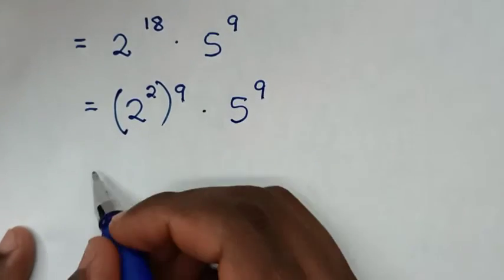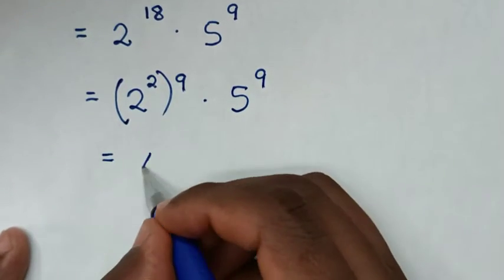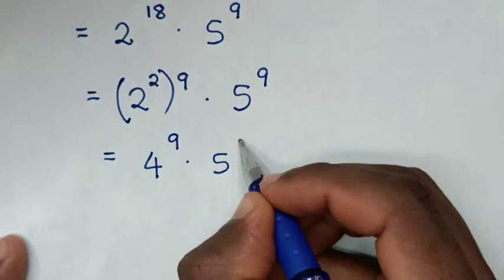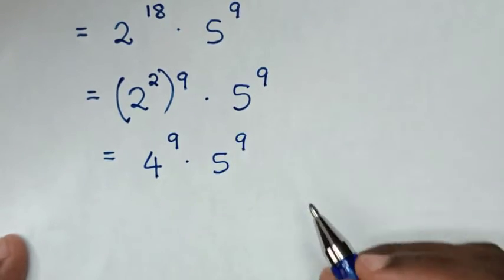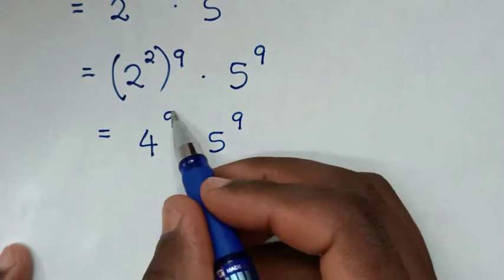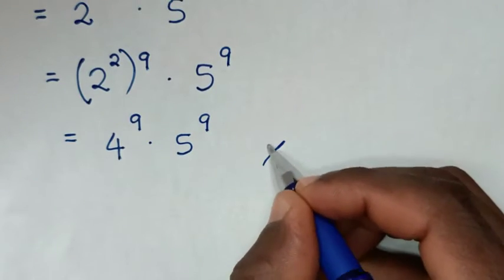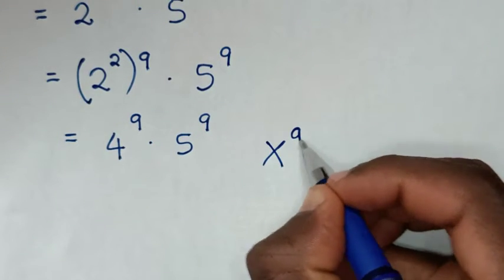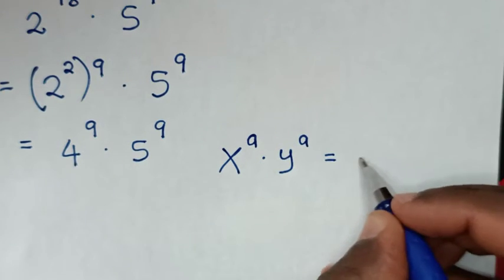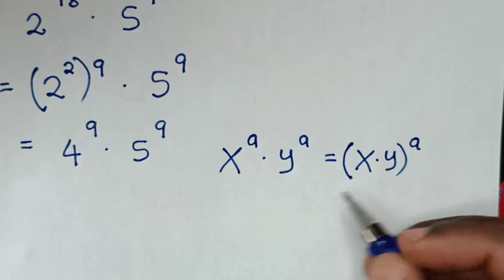Then in the next step, it will be equal to 2 power of 2, which is 4, power of 9, times 5 power of 9. Now, from this multiplication of exponents with the same power of 9, we'll apply the exponential rule that x power of a times y power of a is equal to x times y, bracket power of a.